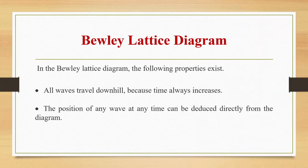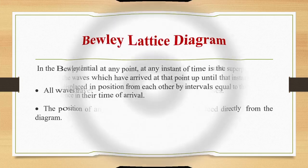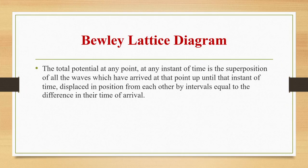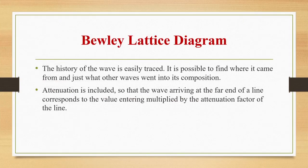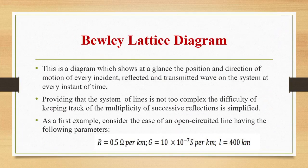In the Bewley lattice diagram, the following properties exist: (1) All waves travel downhill because time always increases. (2) The position of any wave at any time can be deduced directly from the diagram. (3) Total potential at any point at any instant of time is the superposition of all waves which have arrived at that point up to that instant, displaced by intervals equal to the difference in time of arrival. The history of the wave is easily traced. Attenuation is included so that the wave arriving at the far end of a line corresponds to the value entering multiplied by the attenuation factor.